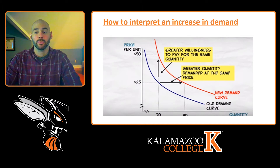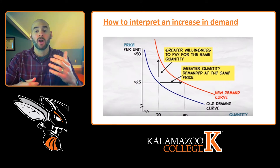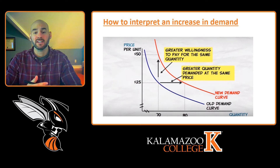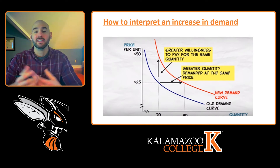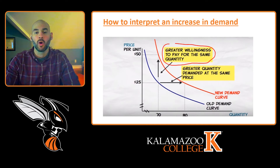Just as we could read a demand curve in two ways — starting with the quantity, going up to see what the marginal benefit or willingness to pay would be, or starting with the price and seeing how many units are bought and sold — we can also read an increase in demand or a decrease in demand in two ways. An increase in demand can be interpreted as a greater willingness to pay for the same quantity.